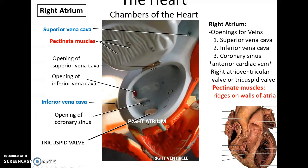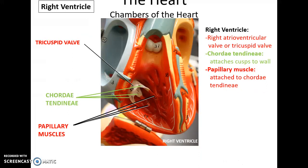At the inferior side of the right atrium is the opening for the right atrioventricular valve, also known as the tricuspid valve, which then leads to the right ventricle. So the right ventricle starts off with the tricuspid valve. As you can see, the leaflets or cusps of the tricuspid valve push into the right ventricle, and there are three cusps on the tricuspid valve.